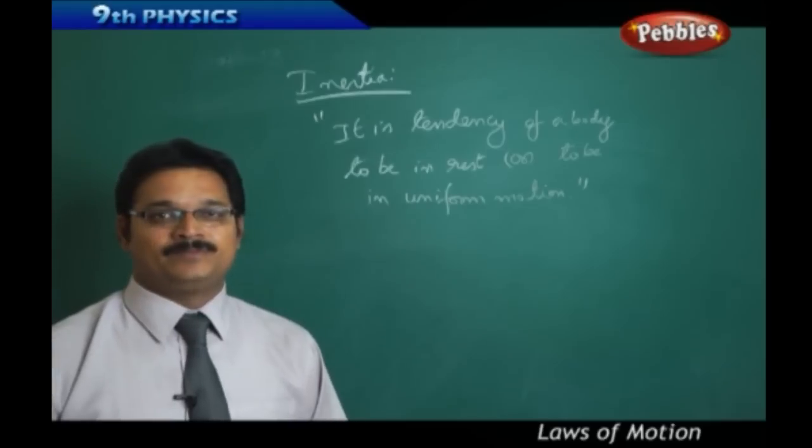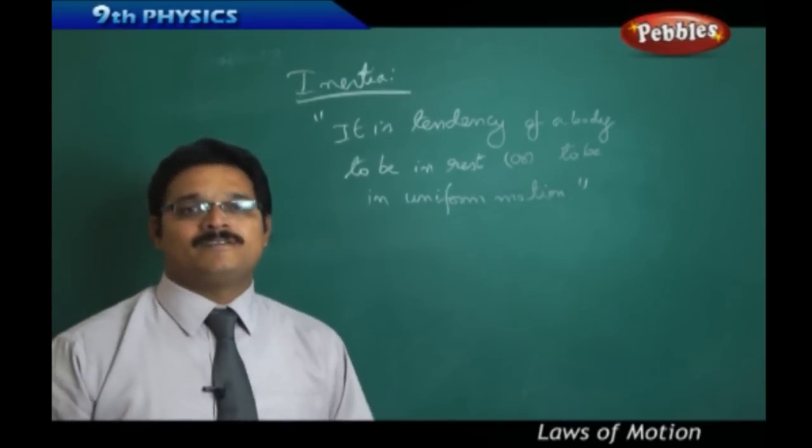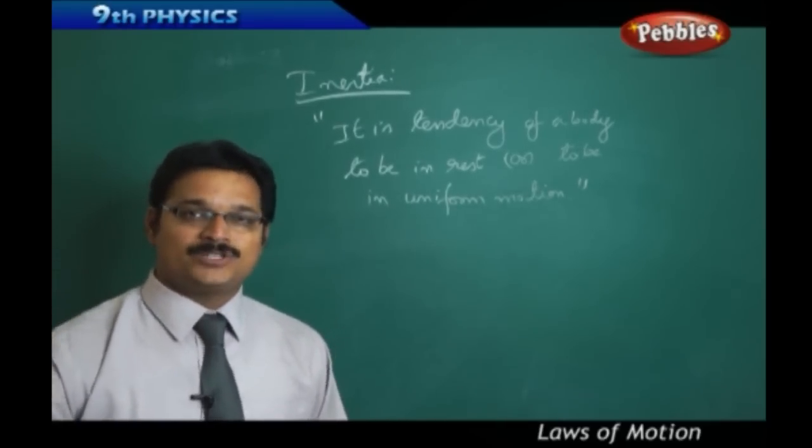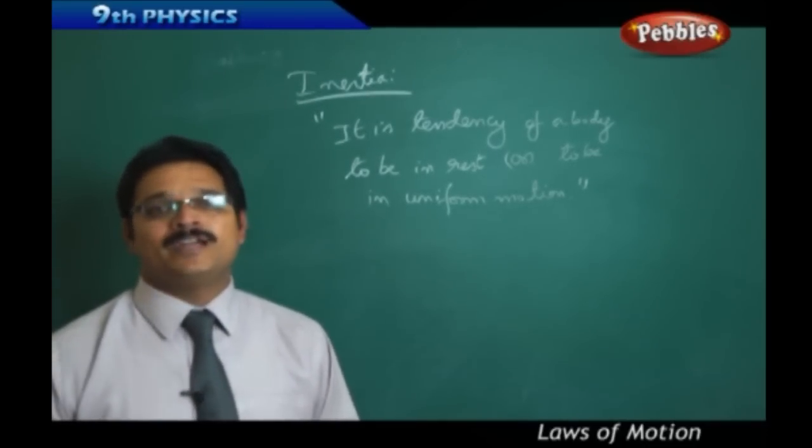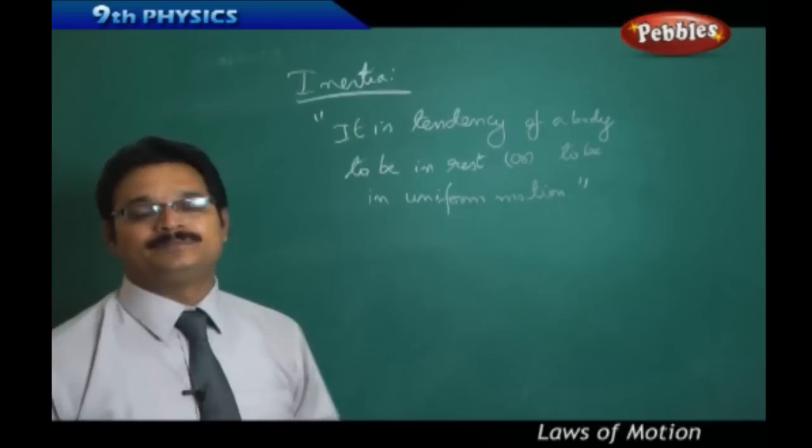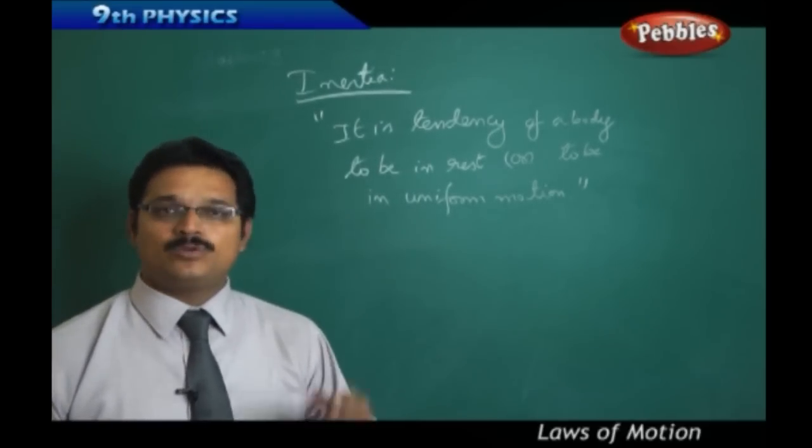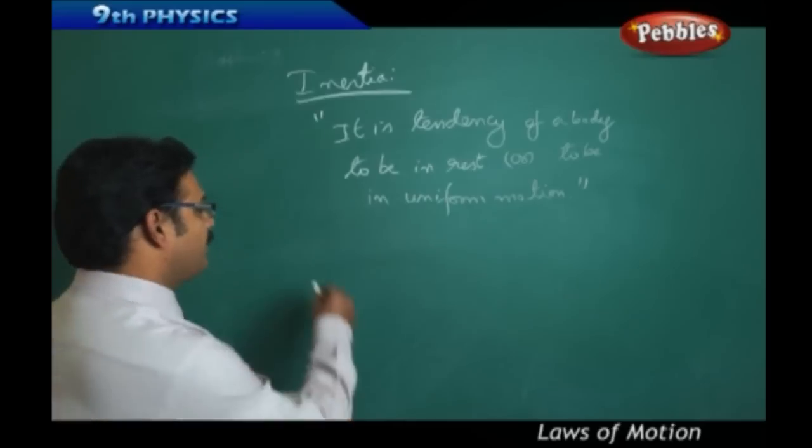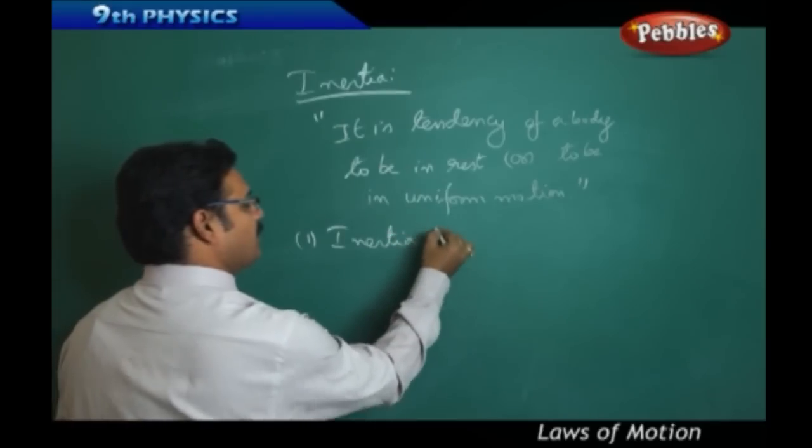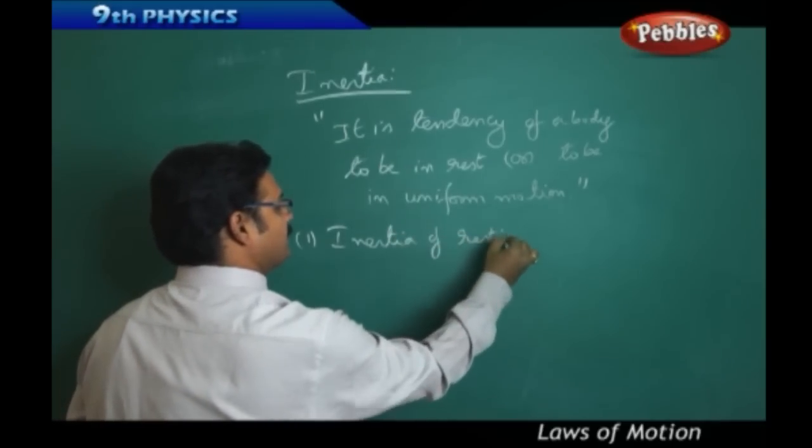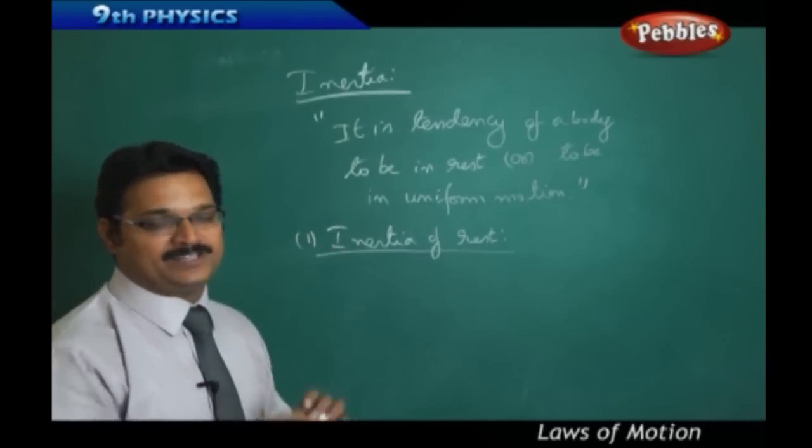That is what's called inertia. Whenever in the rest state, the body wants to be in rest. Whenever you're in the motion state, the body wants to be in motion. This is what's called tendency of the body, and that tendency is called inertia. After defining this, we understand that we have two types of inertia. Number one: inertia of rest, which means the body wants to be in rest state.